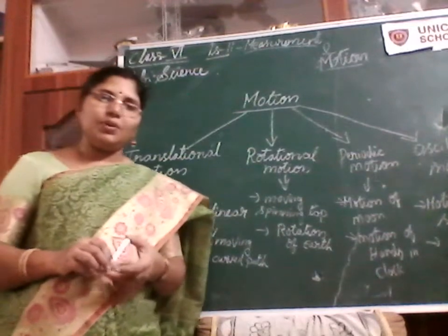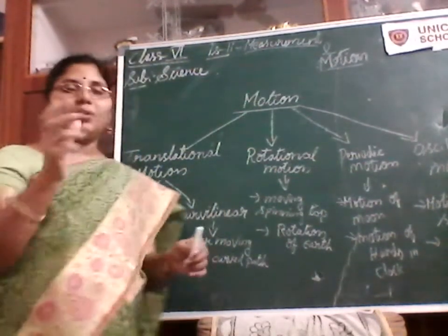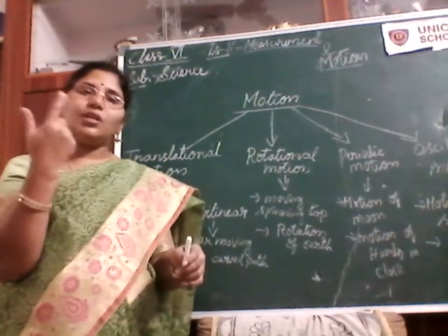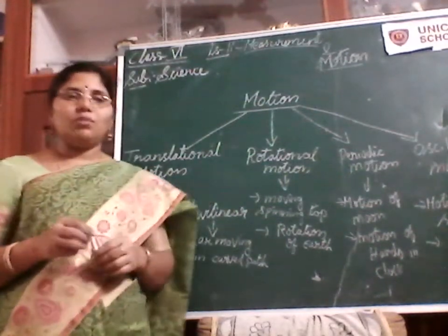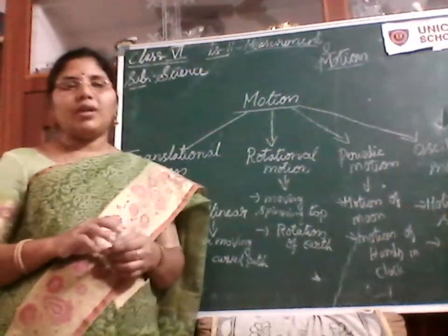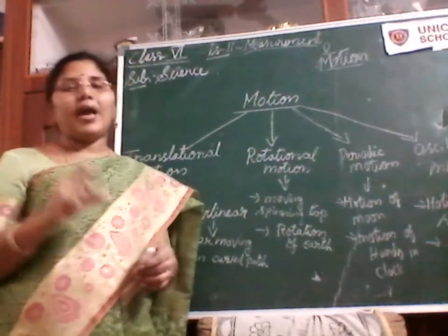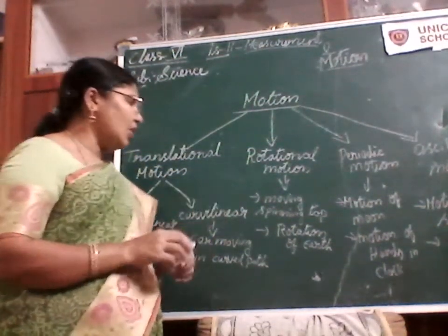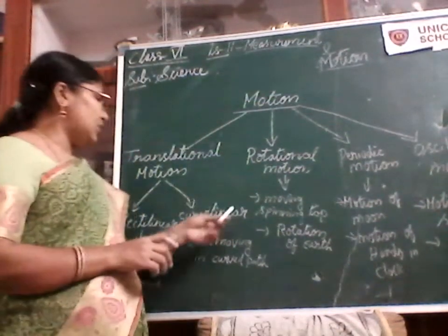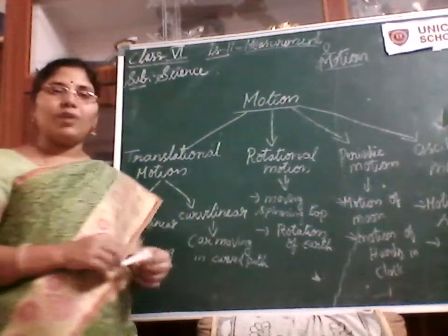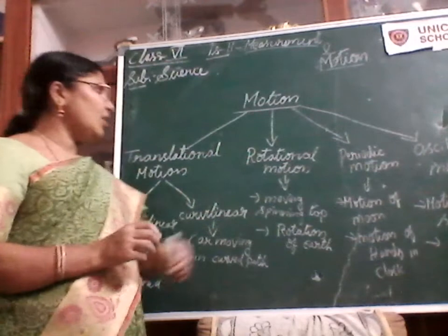Another example is a spinning top. A spinning top moves around itself on a particular axis. So, rotational motion means the movement of an object around itself on its own particular axis. The two examples are a spinning top and the rotation of the earth.